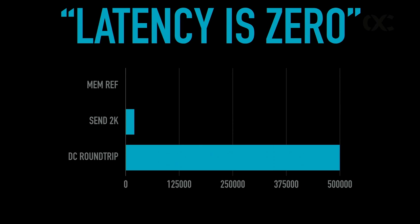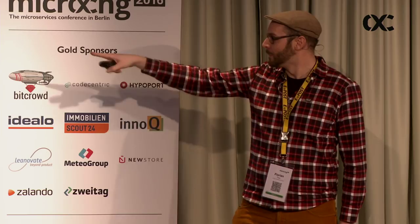But the apparent cheapness of clusters of off-the-shelf hardware is a myth. This is from the fallacies of distributed systems: one of these fallacies is that latency is zero, and you don't have that in a distributed system or in a microservices architecture. These are the times it takes for a memory reference — a local memory reference in the CPU — it's not on the chart, it's just too small. Sending something over a gigabit network is a bit longer, and a data center round trip is vastly longer than a local memory reference. We're paying with latency when we do microservices.